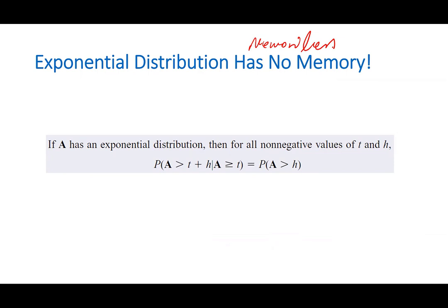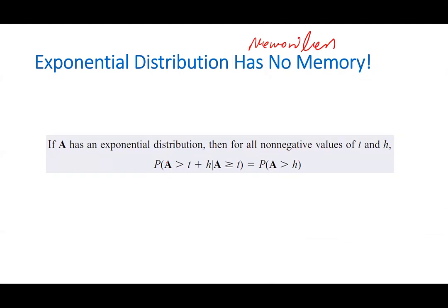What does it mean? It means probability of A — we know that A is the random variable which is the time, the inter-arrival time of the next arrival, between the last one we've seen and the next one. Probability that A is greater than T plus H, given that A is already greater than T.